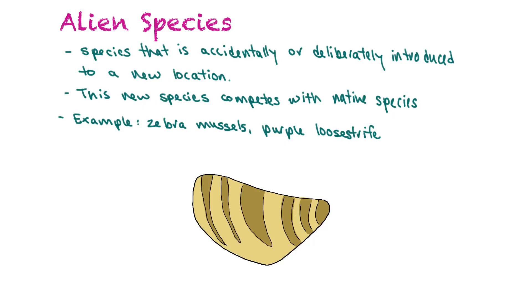Purple loosestrife is a plant that was brought into people's gardens for its pretty purple flowers, but the seeds dispersed and ended up in our wetlands. They're now competing with cattails, which reduces habitats for some of the animals that would live among the cattails.